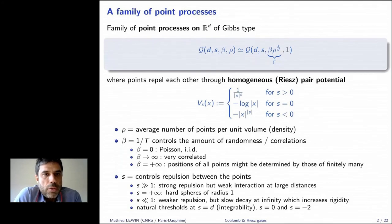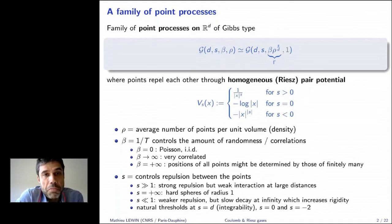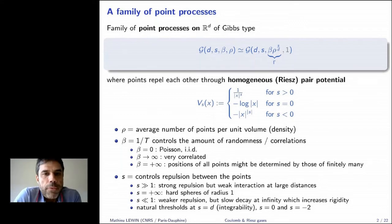We are talking about a family of point processes on ℝ^d of Gibbs type. This family depends on a few parameters: first, the dimension d — I'll always think of d = 1, 2, or 3, though in principle any dimension works. The most important parameters are s, β, and ρ. Here ρ is the average number of points per unit volume, i.e., the density. It's a point process over infinite point configurations over the whole space.